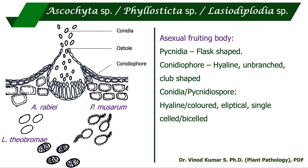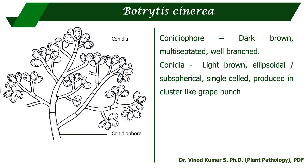Botrytis cinerea is a post-harvest pathogen known to cause gray mold in fruits and blossom blight in flowers. The conidiophore is dark brown, multiseptate, and well branched. The conidia are light brown, ellipsoidal or subspherical, single-celled, and produced in clusters that resemble a grape bunch.